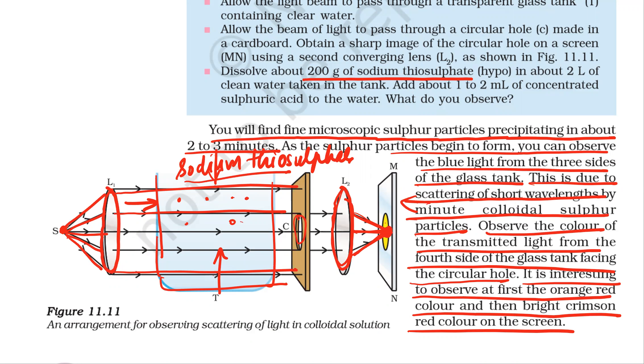From three sides we are viewing blue color, but from the fourth side we are seeing red color. The conclusion from this activity is that very fine particles scatter mainly blue light of smaller wavelength, and the transmitted light over longer distance contains longer wavelength, that is red color.